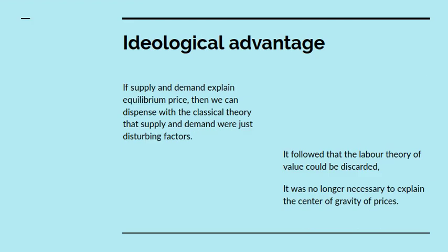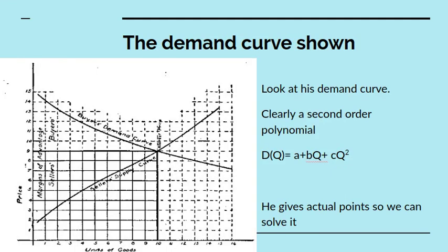This had certain ideological advantages. If supply and demand explain equilibrium price, then you can dispense with the classical theory that supply and demand were just disturbing factors. And if supply and demand determine value, then the labour theory of value can be discarded. It was no longer necessary to explain the centre of gravity of prices, because that was now given by the intersection of these two curves.